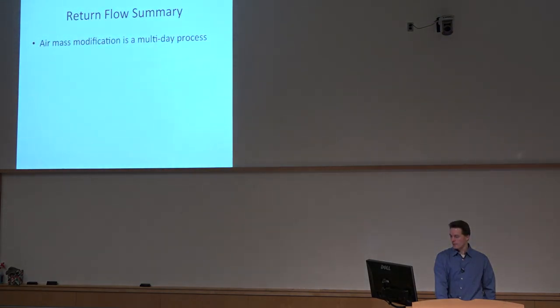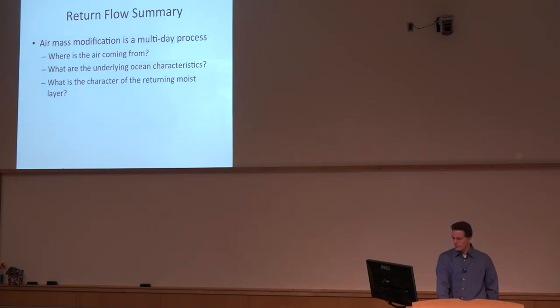So we'll just summarize this. The air mass modification is a multi-day process. You need to know primarily where's the air coming from, what are the underlying ocean characteristics, and then you can estimate what the character of the returning moist layer will be. So things like the depth of the cool air intrusion, the underlying ocean state, and the change in the surface trajectories over time are all important. And if you can master those processes then you'll have a pretty good guess at what the return flow moisture will look like without even resorting to a numerical model forecast. And this gives you the chance to judge the quality of, say, a model forecast by applying a conceptual model to the whole air mass modification cycle.